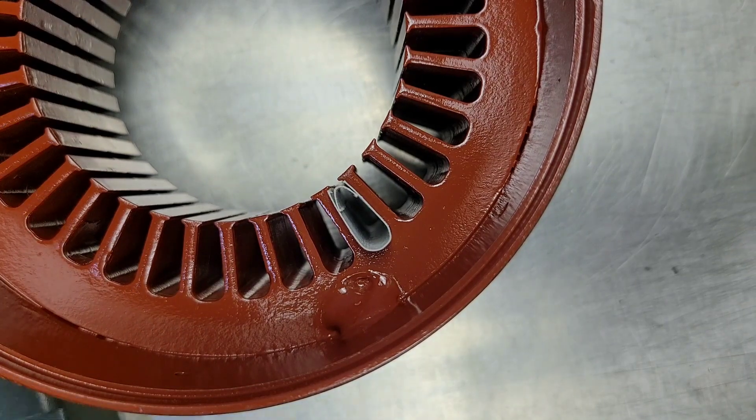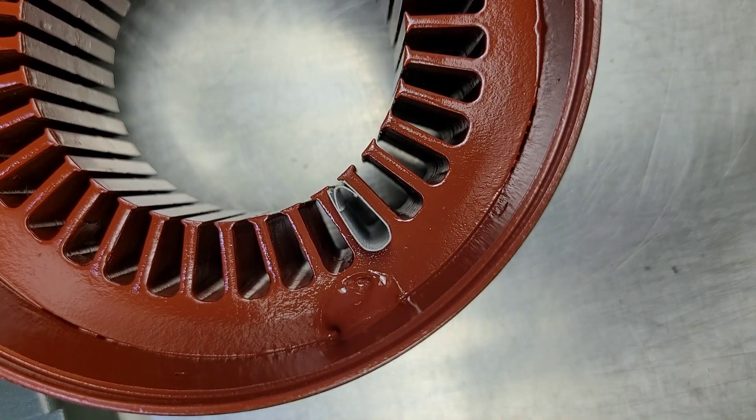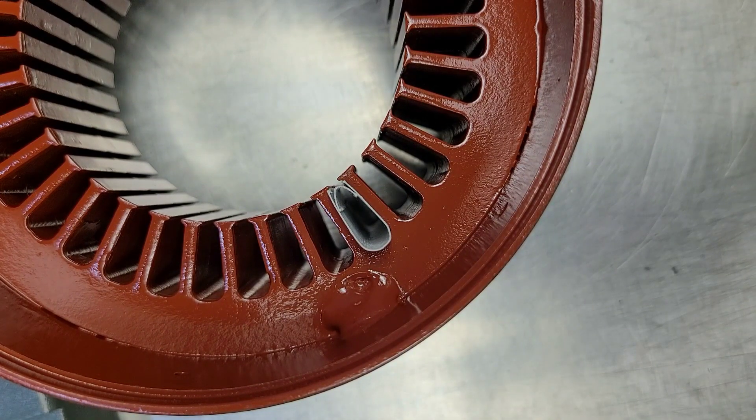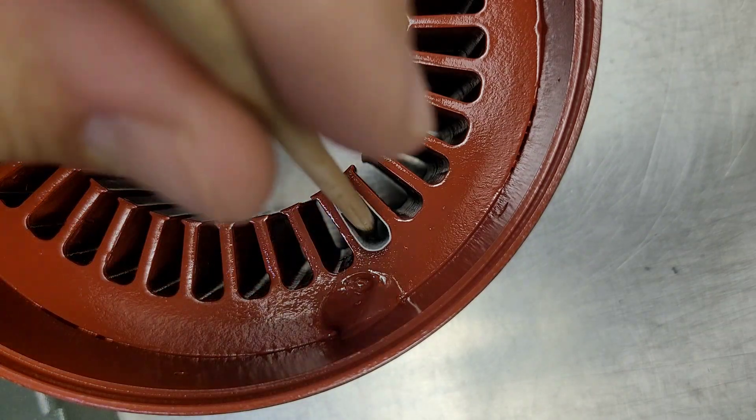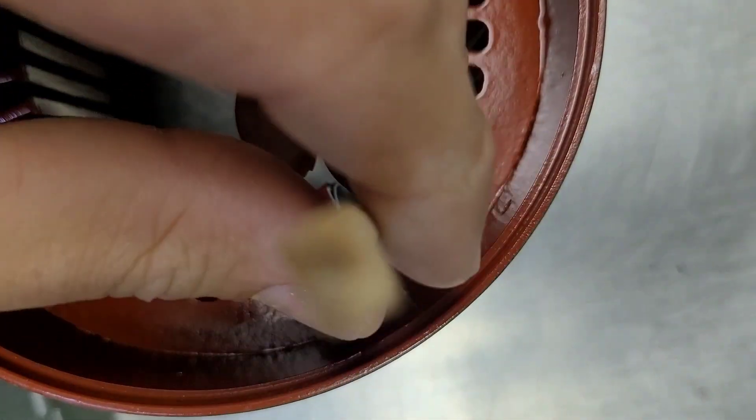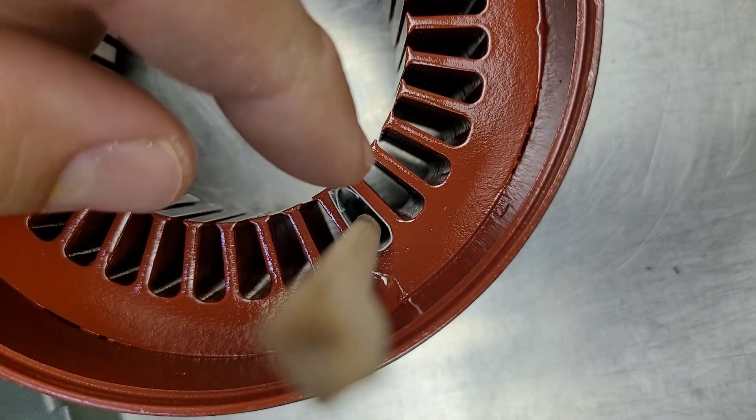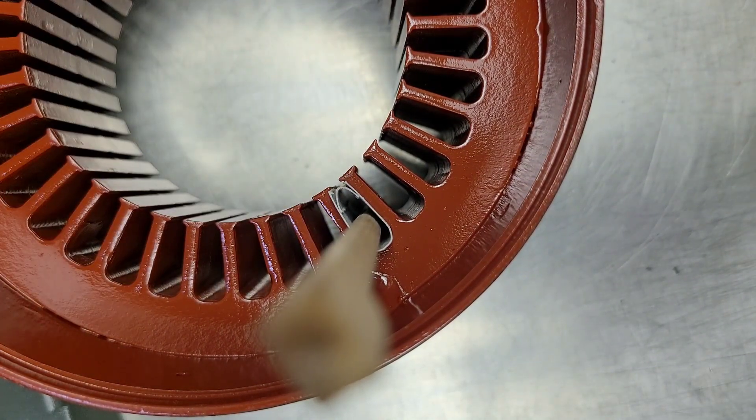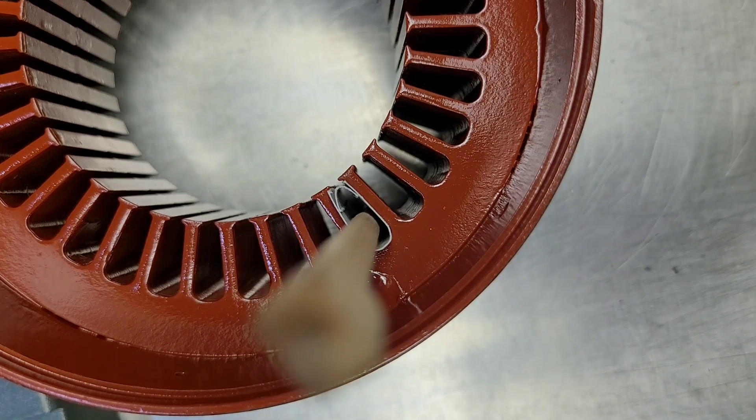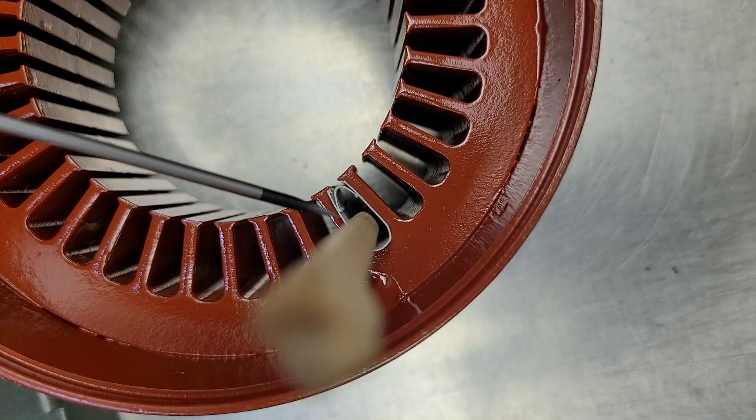Now how that works is let's say you have your winding. I'm just going to use this wood stick - let's say that that is the magnet wire that is going through that slot.